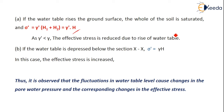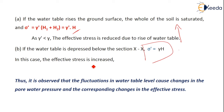If the water table is depressed below section XX, then sigma' = gamma·h, meaning the effective stress is increased. From this observation we can conclude that fluctuations in the water table level cause changes in the pore water pressure, which correspondingly causes changes in effective stress.